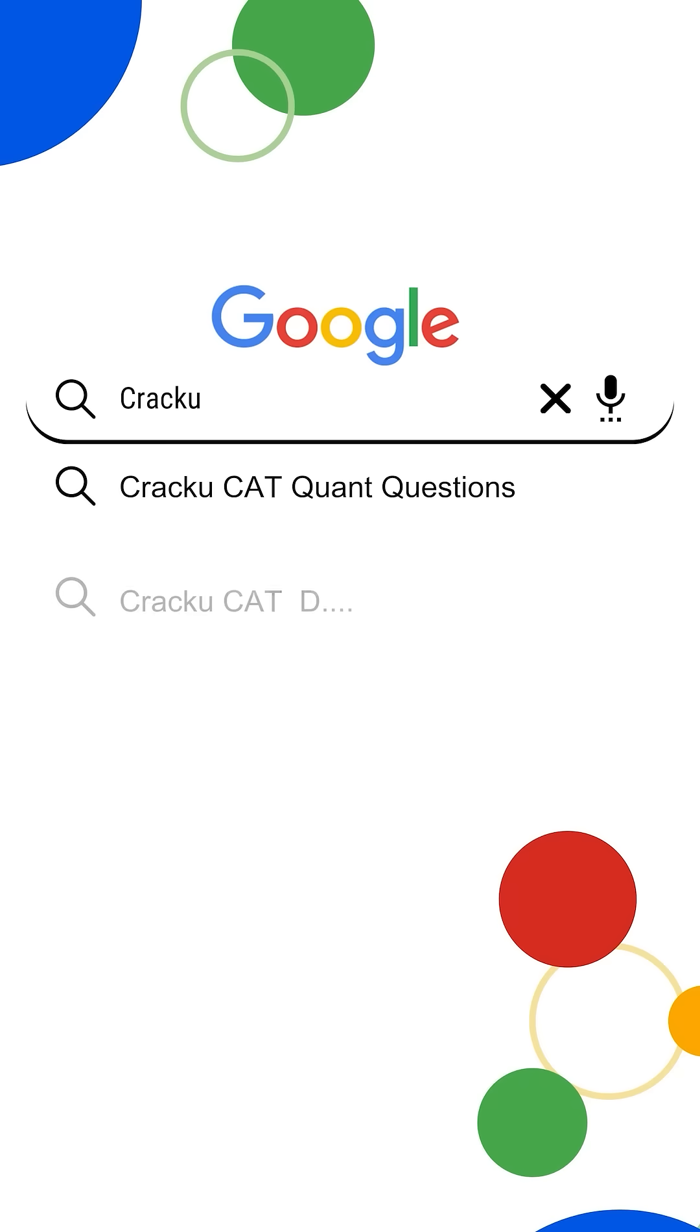If you want a structured daily practice plan, just go to Google and search Cracku CAT daily targets.